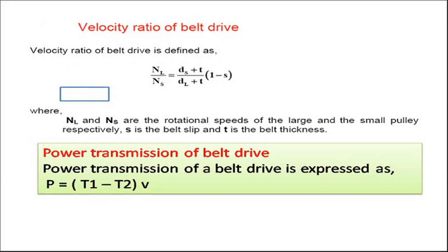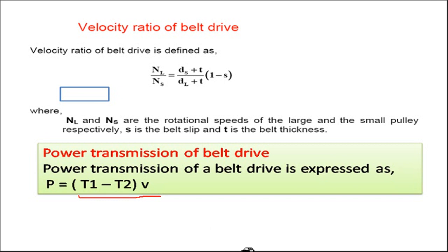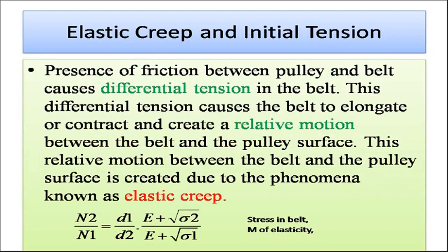The power of the belt drive is given by P = (T1 minus T2) times V. Now we will also understand the concept of elastic creep and initial tension in the belt.